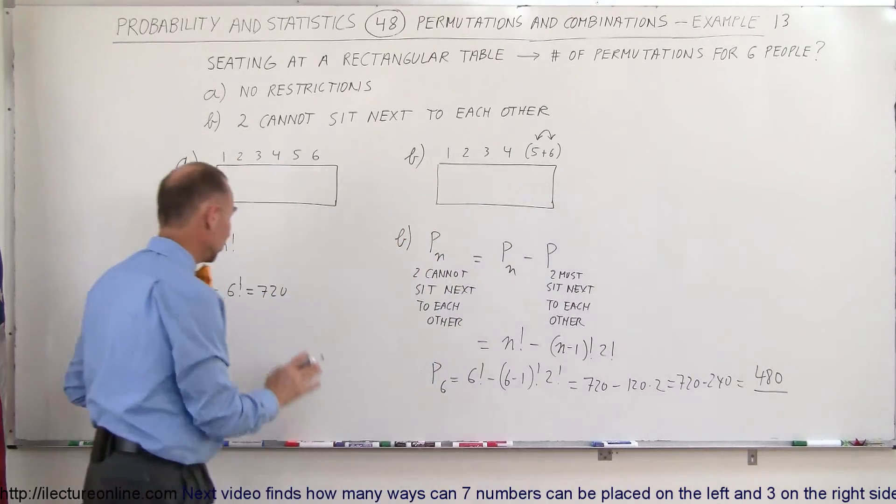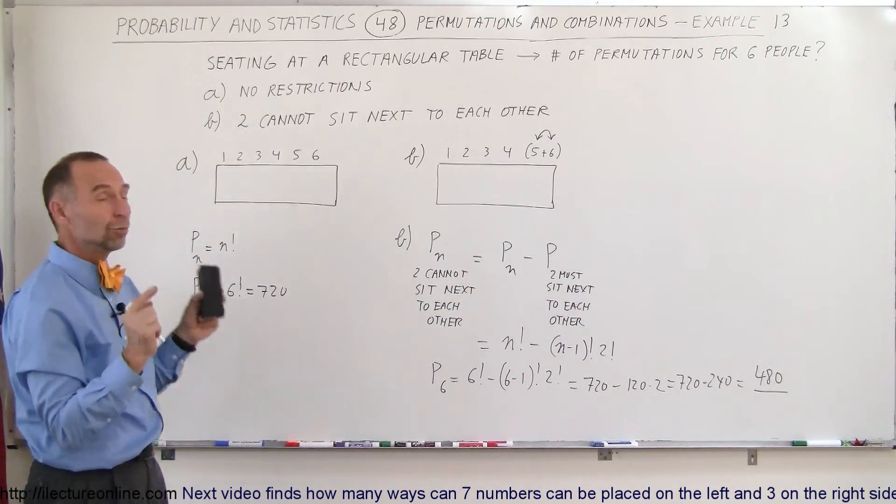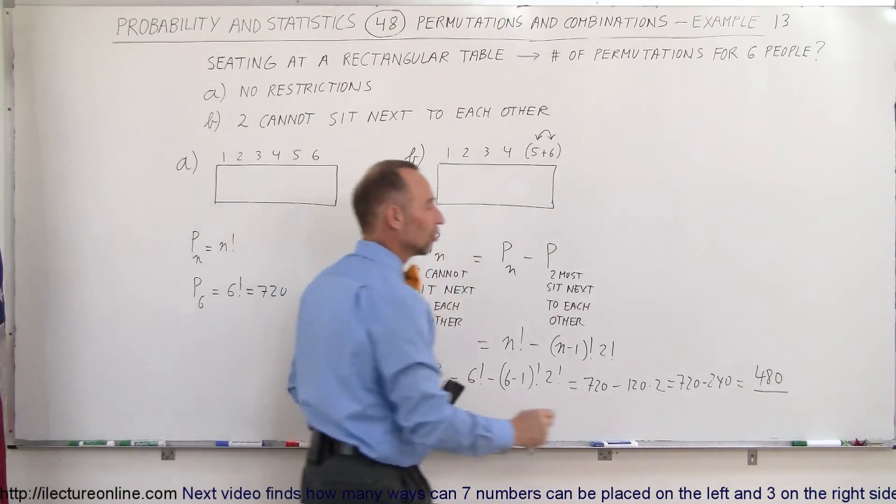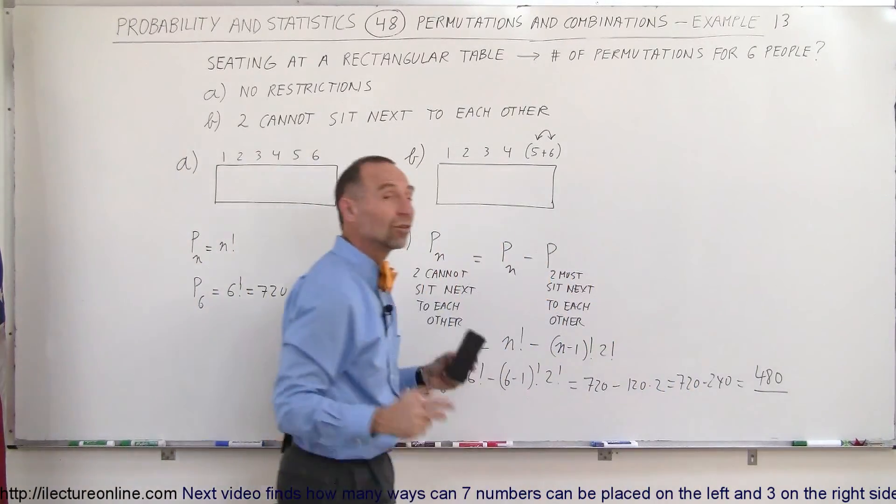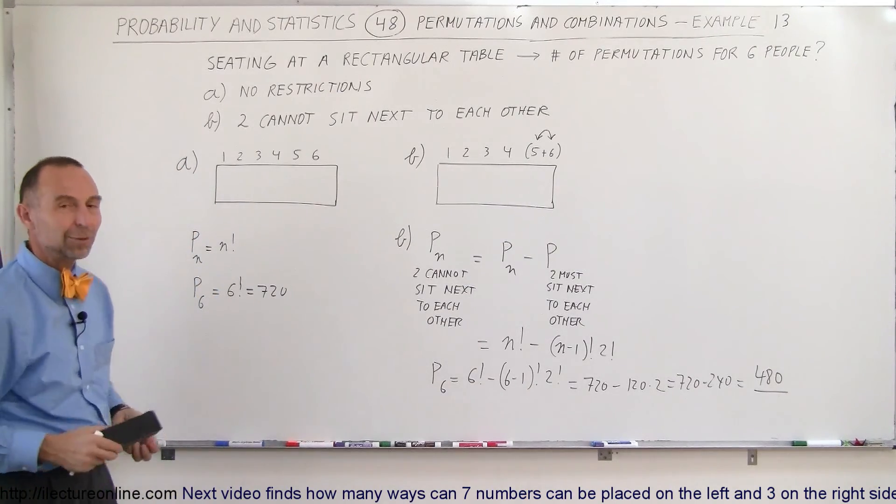So if there's no restrictions, you can have 720 different permutations, but with the restriction that two people cannot sit next to each other, there's only 480 ways in which you can sit those people at a rectangular table. And that's how we do that.